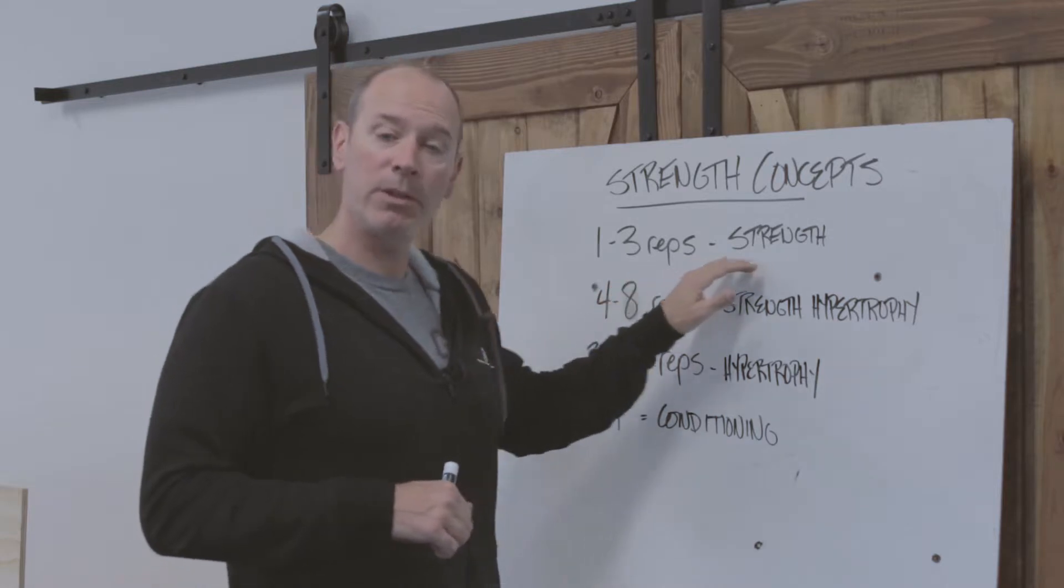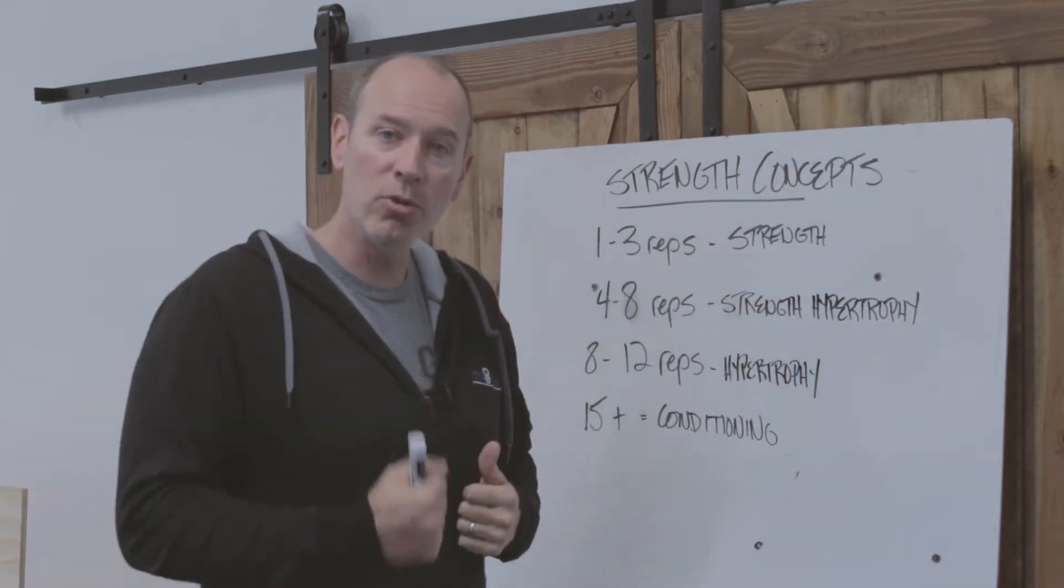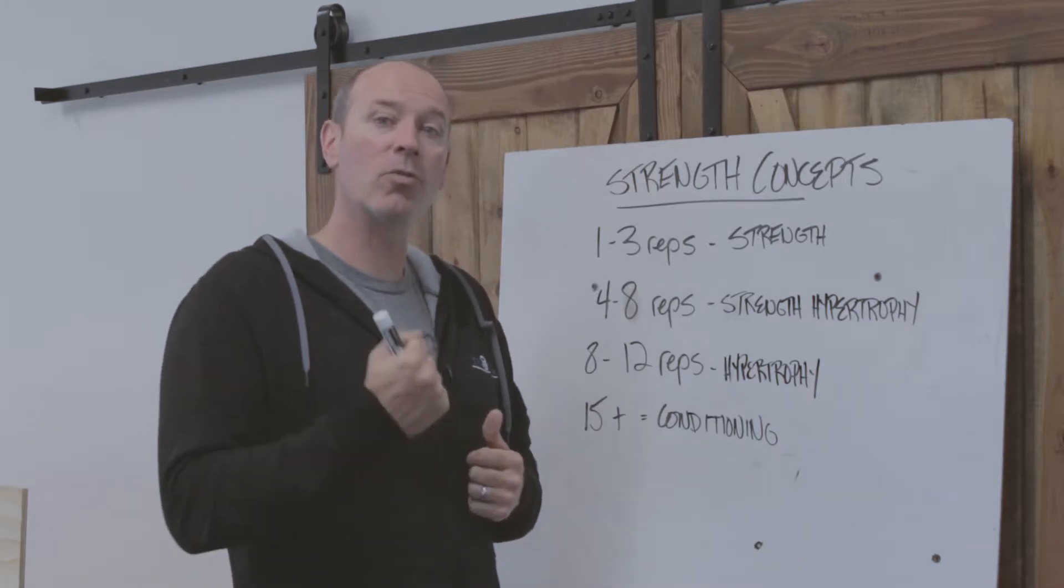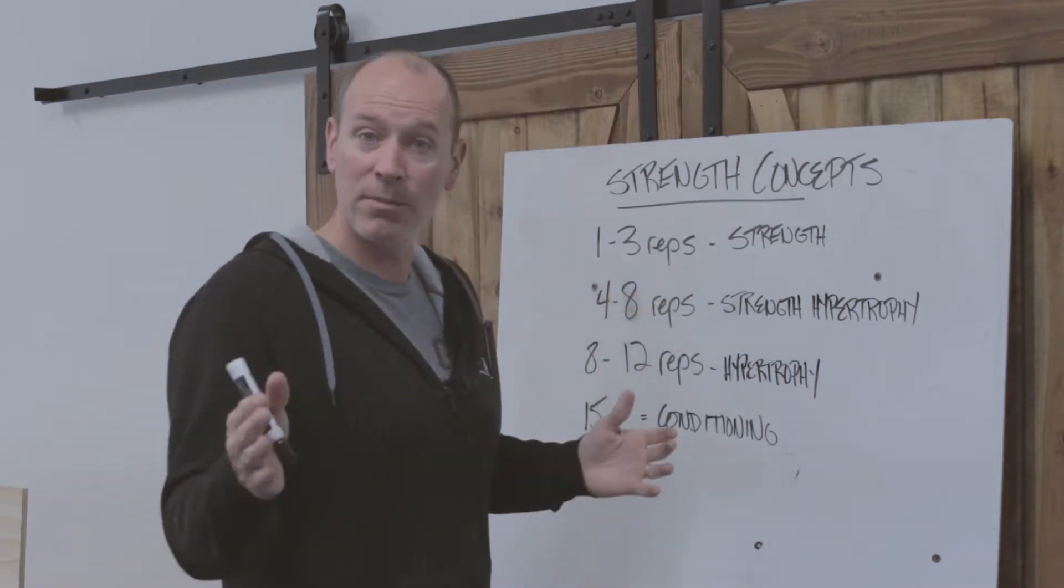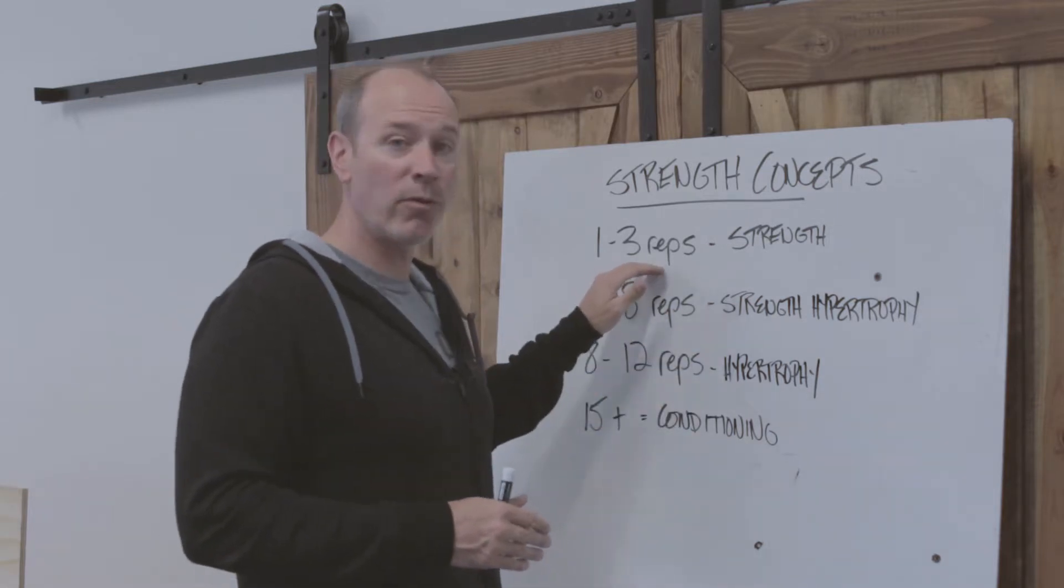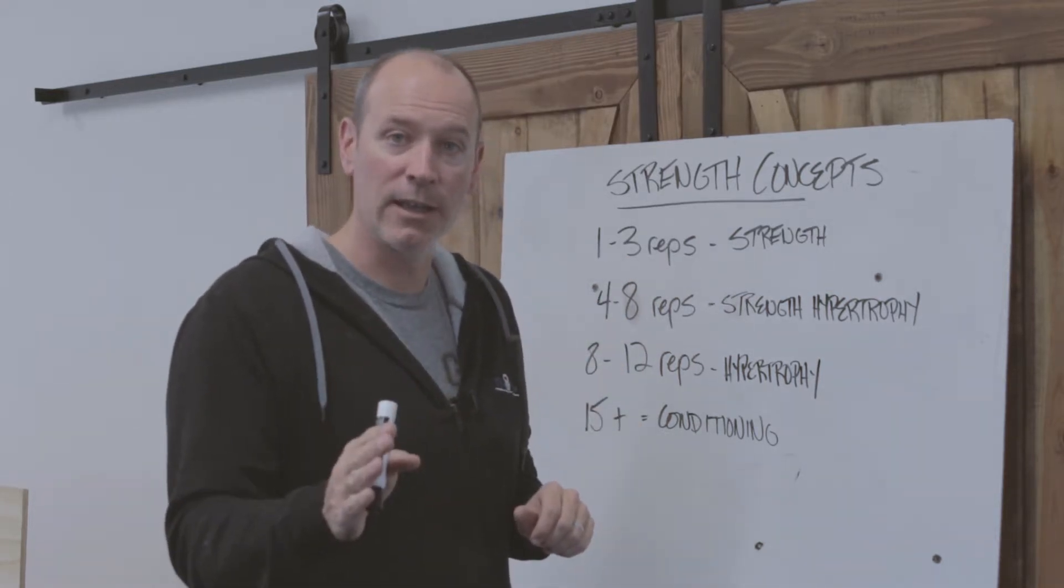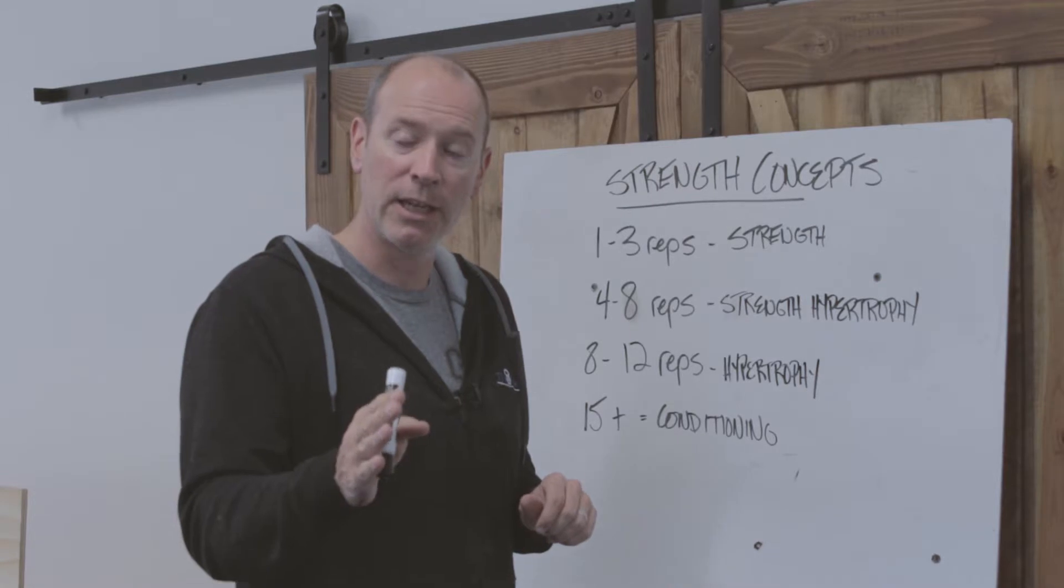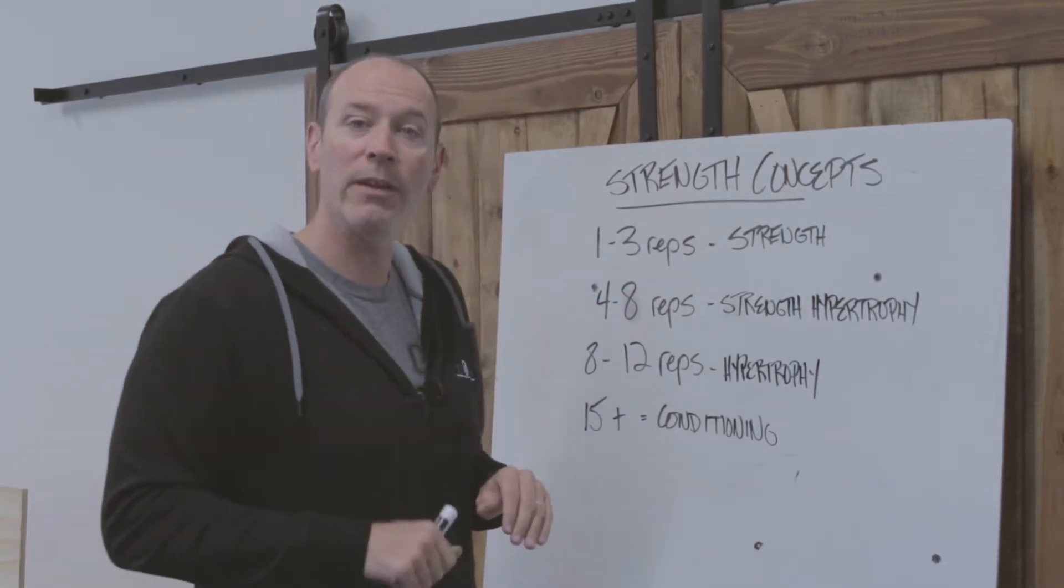The first area, one to three reps, would be pure strength. Literally your nervous system is getting stronger so you can move a much heavier weight. When we write something like this on the board, it means I can't get four reps, I can't get five reps. You have to have perfect technique—absolutely perfect technique. Your coach will not allow you to go outside of this realm if you have any flaws in your game.